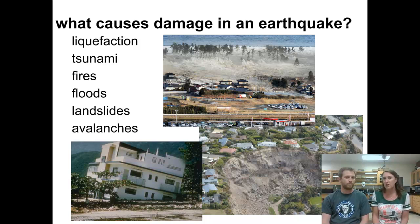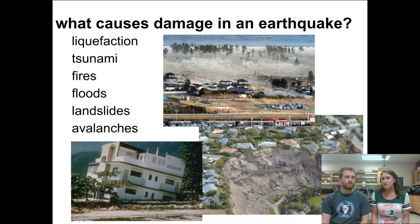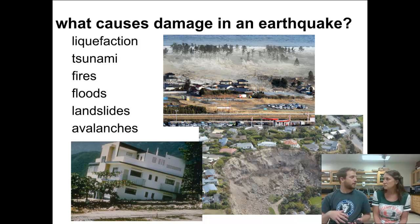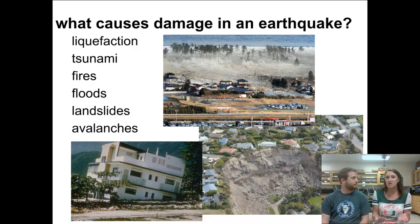Fires are often triggered when gas lines are ruptured underground during an earthquake — that's what causes those fires. Sometimes floods are triggered through dams that are breached, releasing large amounts of water. Landslides and avalanches are really similar: you've got some rock or body of land that's not quite stable, and when you add a little bit of energy, it starts moving downhill from gravity. If there's a building on it, it goes with it.